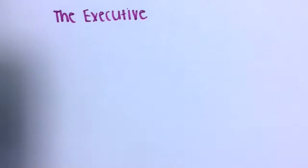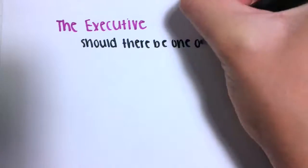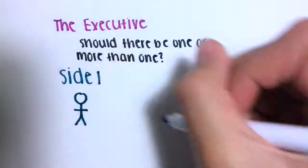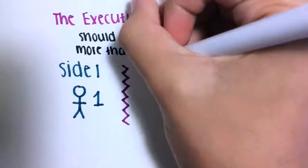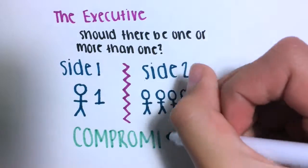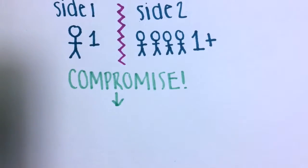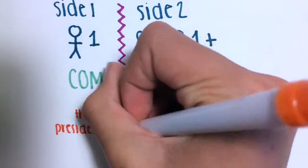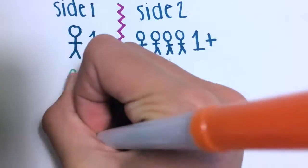The fourth argument was on the executive. Should there be more than one? What kind of powers should they possess? Side 1 claimed that there should be only one executive. Side 2 disagreed, thinking that there should be more than one executive. The results were that the President and Vice President and Cabinet would be checked by different branches, and are chosen by the Electoral College.